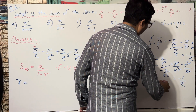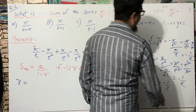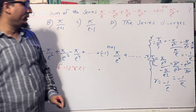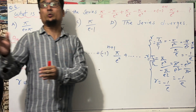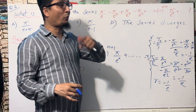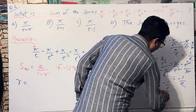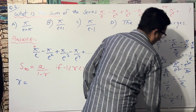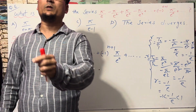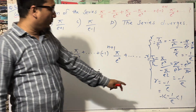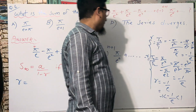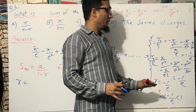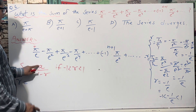The value of e is the irrational number approximately equal to 2.71828... So −1/e ≈ −0.368, which is indeed between −1 and 1. Therefore the condition −1 < r < 1 is satisfied, confirming that the sum of this infinite series exists.